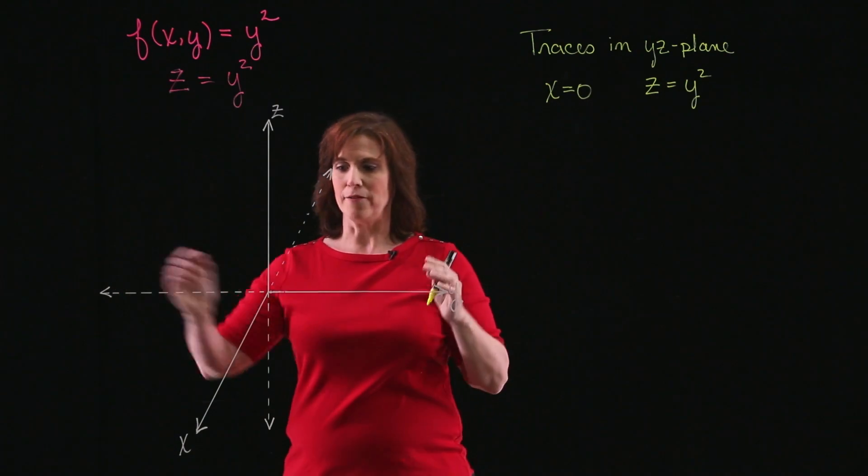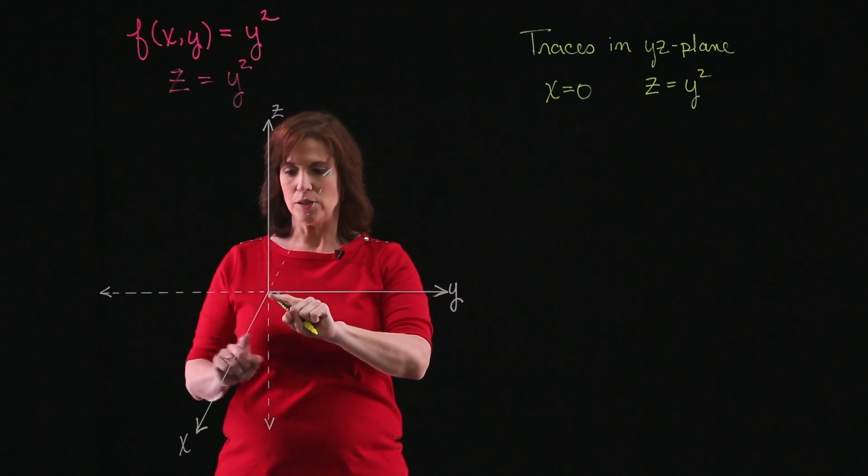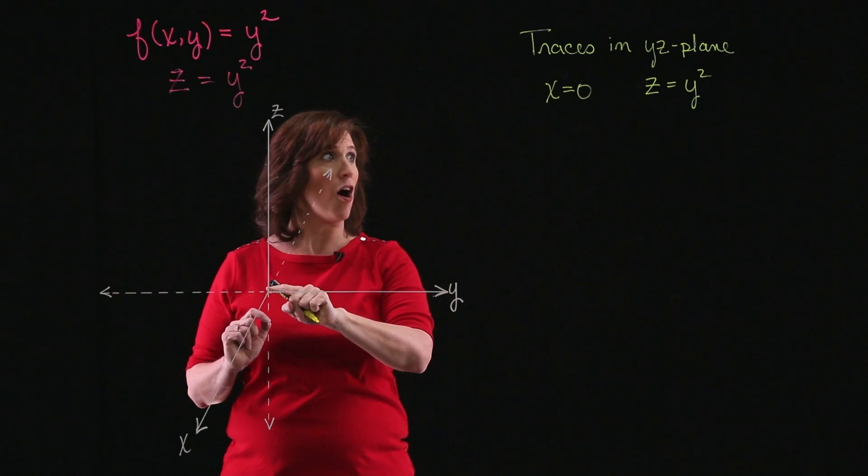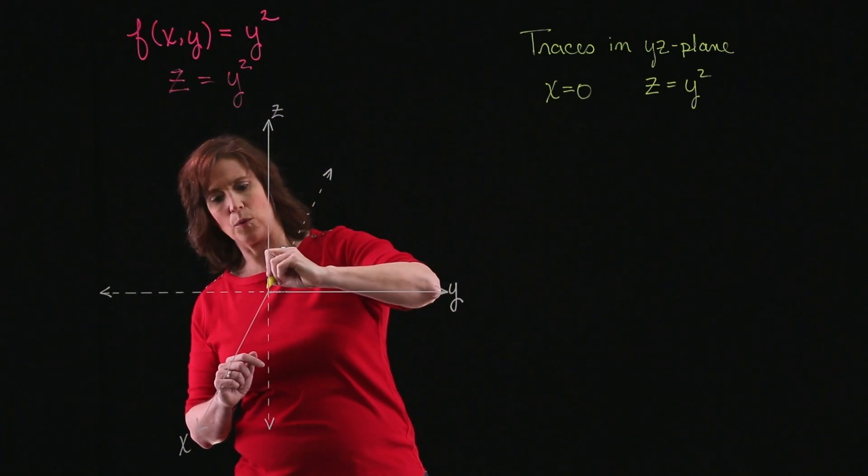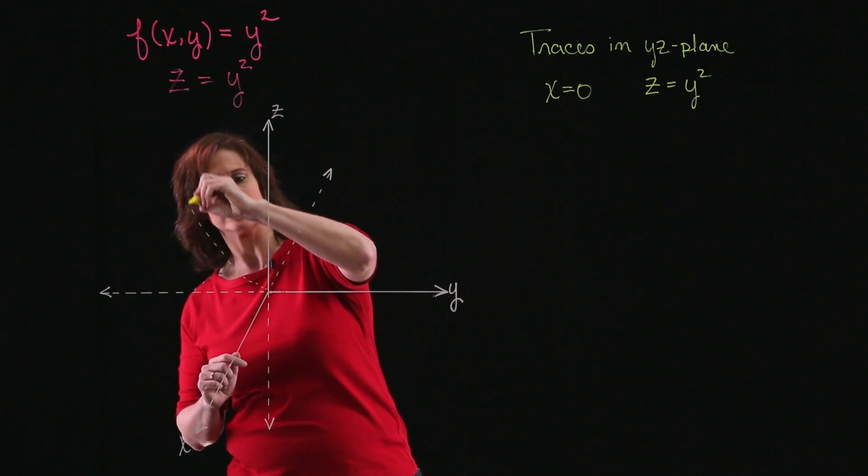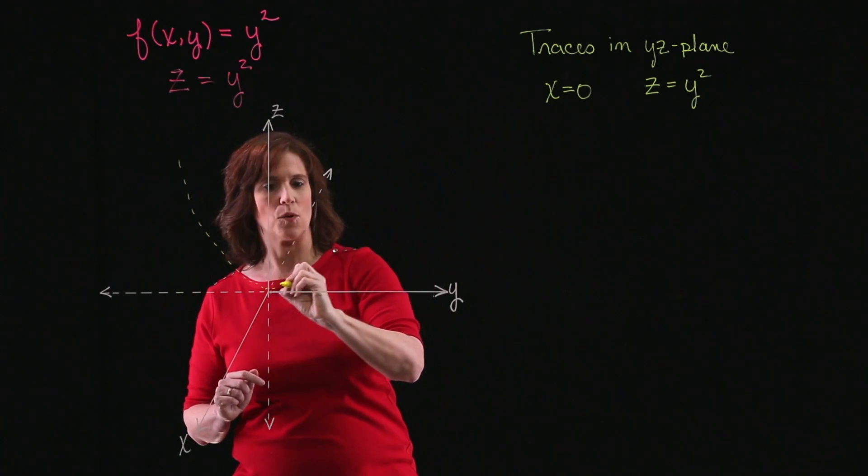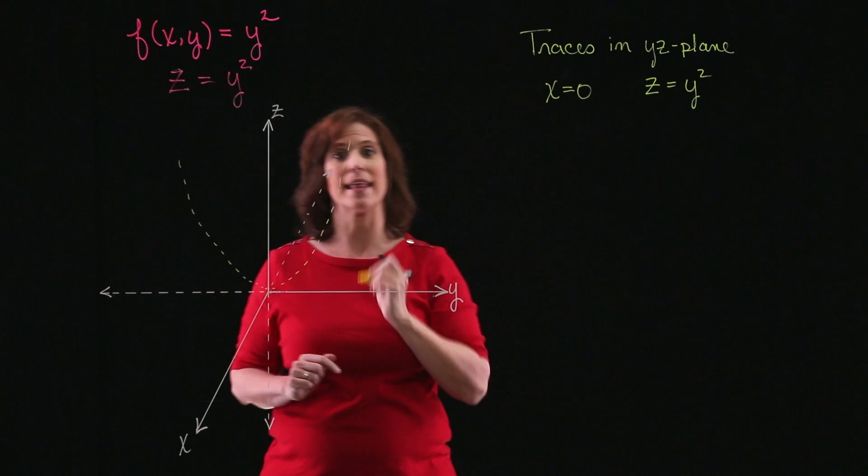So let's come over here to my graph. And remember, x is 0. So I'm not going down the x-axis at all. And I'm going to get a sketch of z equals y squared. So it's going to look something like that.